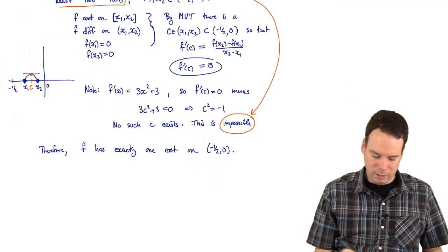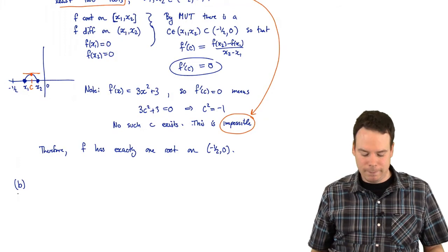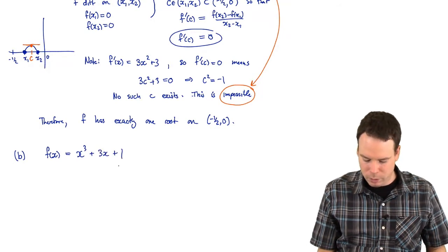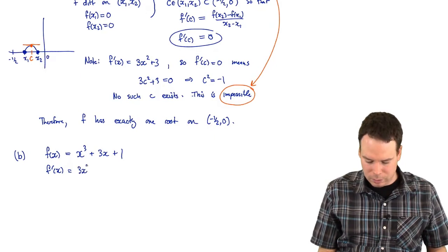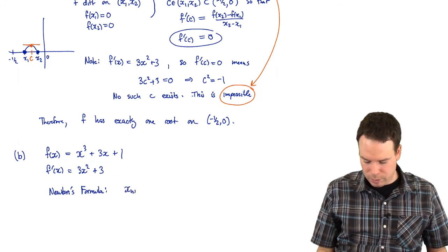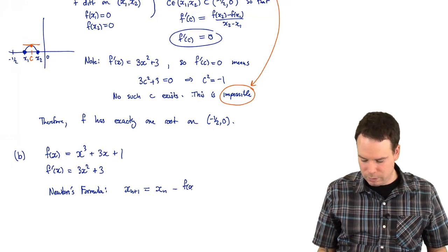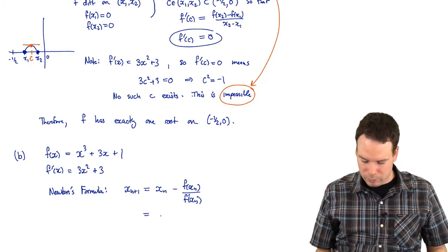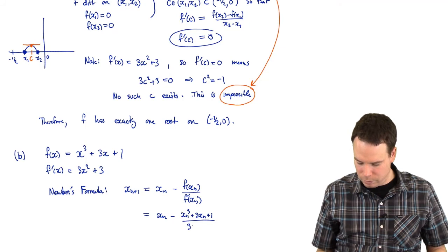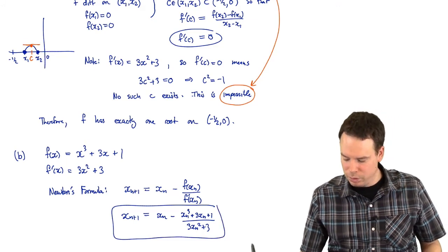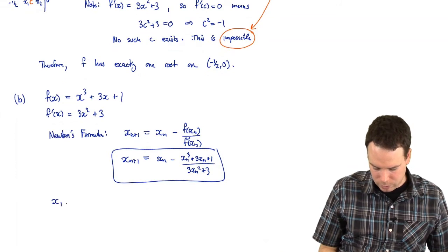Now the next part of the question says: you know there is a root — try to approximate it. So we're going to use Newton's method. Our function is x cubed plus 3x plus 1, and the derivative is 3x squared plus 3. The Newton's iterative formula is x_{n+1} = x_n minus f(x_n) over f prime(x_n), which gives x_n minus (x_n cubed plus 3x_n plus 1) all over (3x_n squared plus 3).